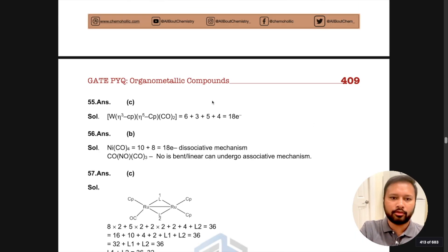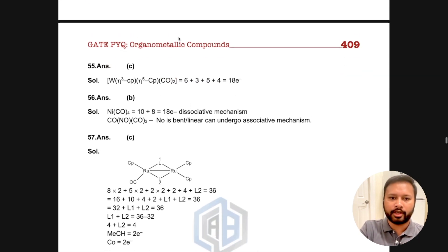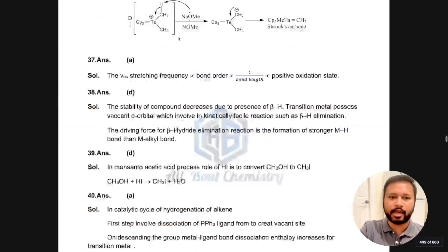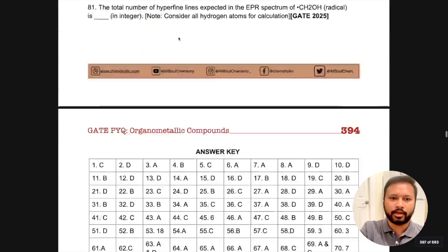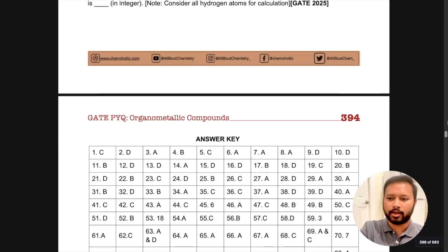If I take you to inorganic chemistry, as I told you the color code given is red over here. This topic is organometallic compounds and you will see that you will have questions till 2025. Questions which were asked in 2025 are also included now.